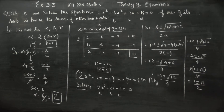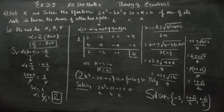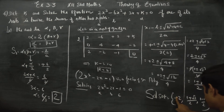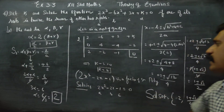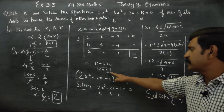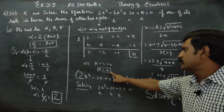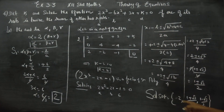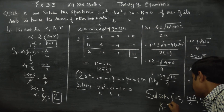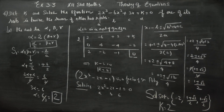Therefore the solution set is: alpha equals 2, and the other two roots are (1 plus root 3)/2 and (1 minus root 3)/2. Also, k equals 2. That is the final answer for both the value of k and the complete solution of the equation. Thank you.